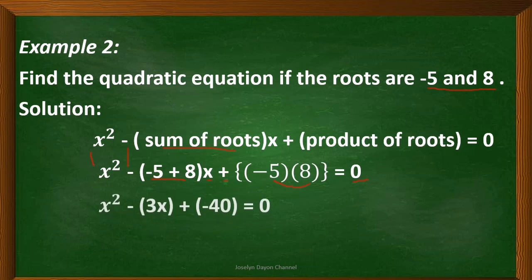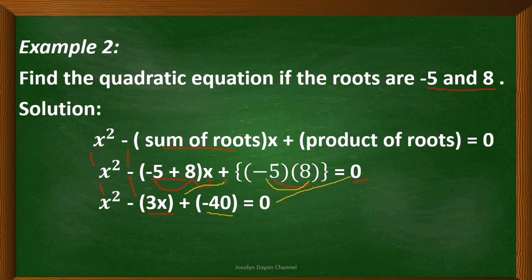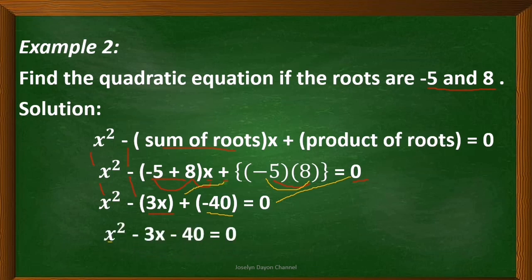Let's simplify. Copy x squared, copy the minus sign. Negative 5 plus 8 is 3, so we have 3x. Copy the plus sign, then multiply negative 5 times 8, which is negative 40. Now remove the grouping symbols, so we have x squared minus 3x minus 40 equals 0. This is the quadratic equation in standard form.